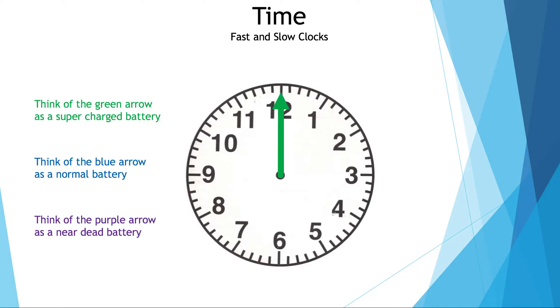Now let's talk about how a slow, normal, and fast clock work. As you can see there's only one arrow at the moment, then the rest will be coming out of hiding in a few short seconds.